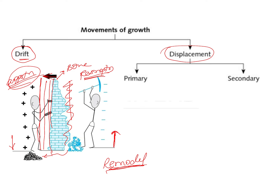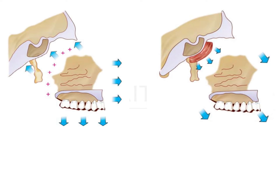The second type of growth movement is displacement. Drifting was a gradual movement because of enlargement of the bone. Displacement is the actual physical movement of the bone because of growth. This again can be of two types: primary displacement or secondary displacement. Primary displacement is that situation where the bone, because of its own growth, is moving away from the adjacent bone.